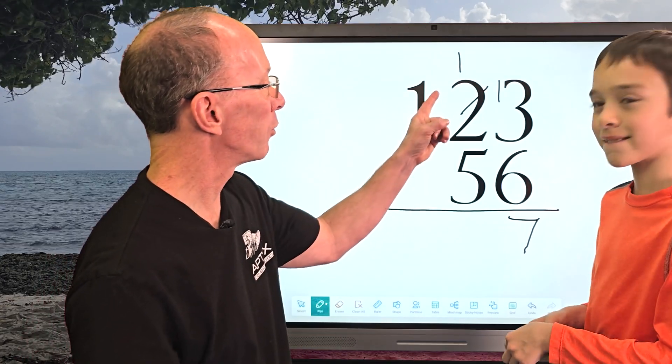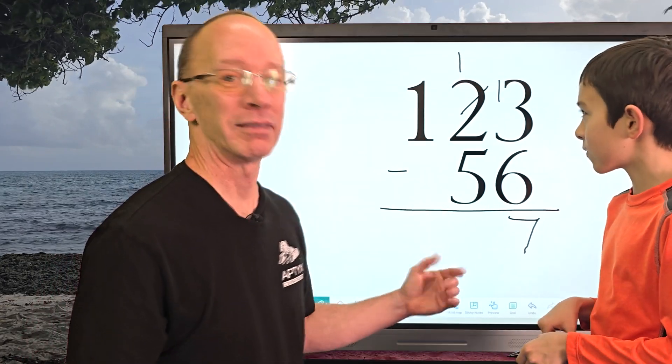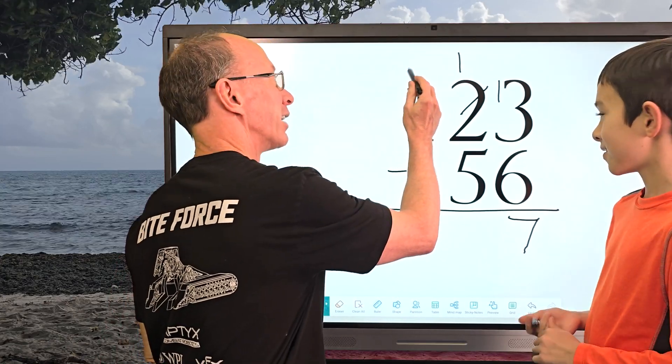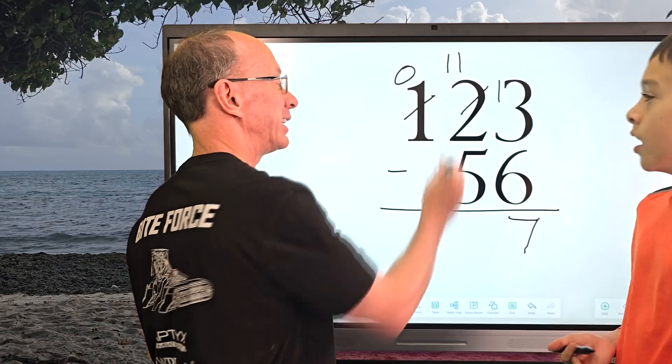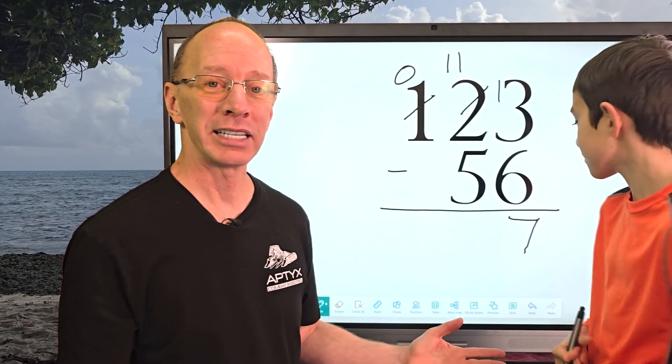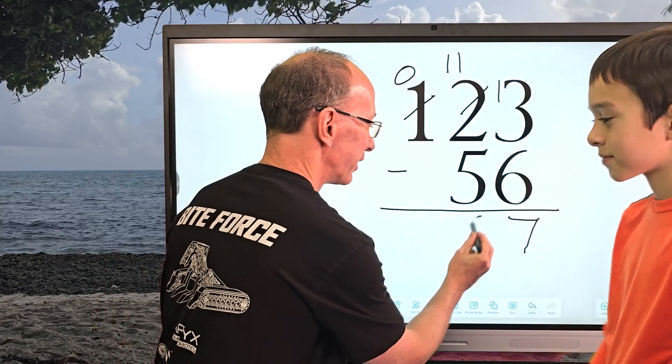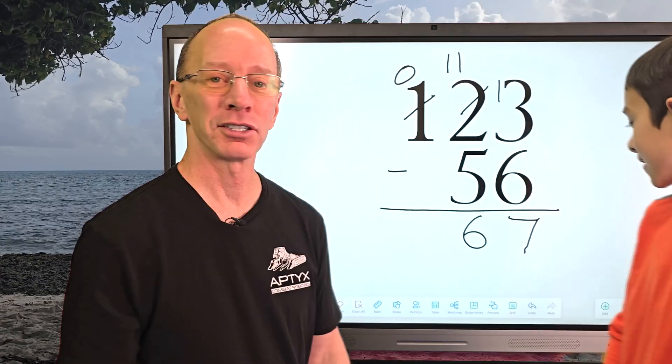And thanks so much for joining us, Lucas. And now I have one minus five. You can't do it. I got to borrow again. Borrow one from the one and that'll be a zero. And now this is an 11. So now what is 11 minus five? Six. Six right here. And that would be our answer, 67.